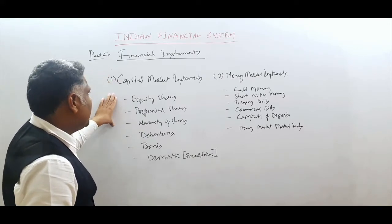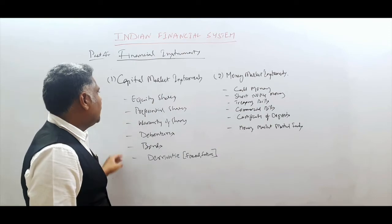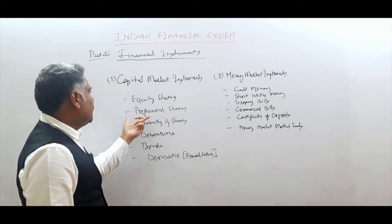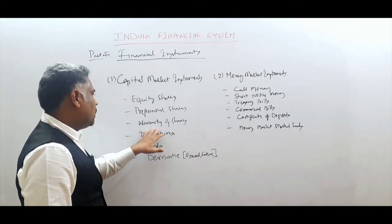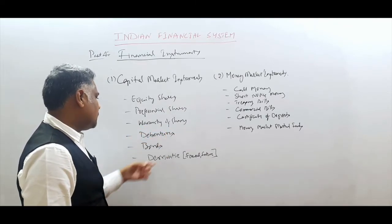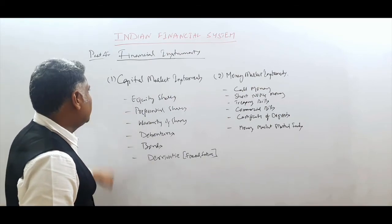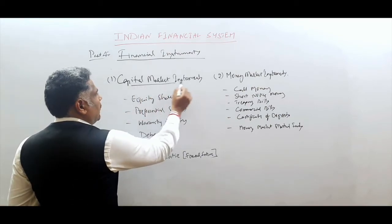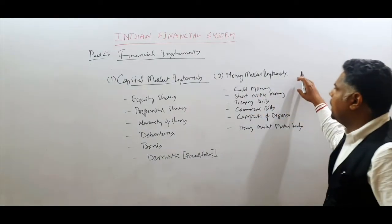Capital market instruments are of the following types: equity shares issued by a company, preferential shares issued by a company, warrants of shares, debentures, bonds, and derivatives. These are the types or forms of capital market instruments or securities.